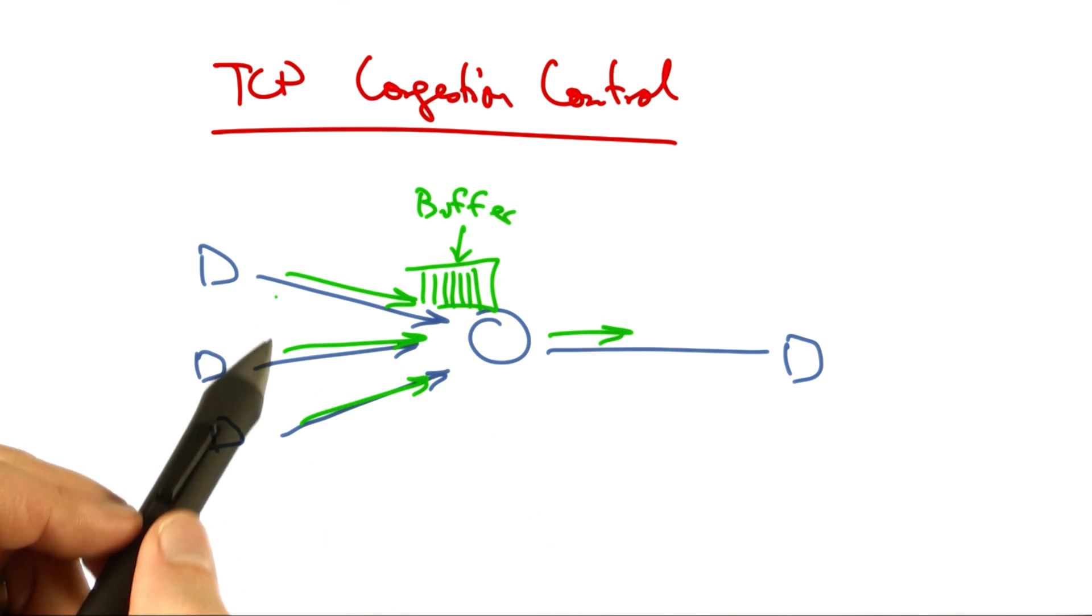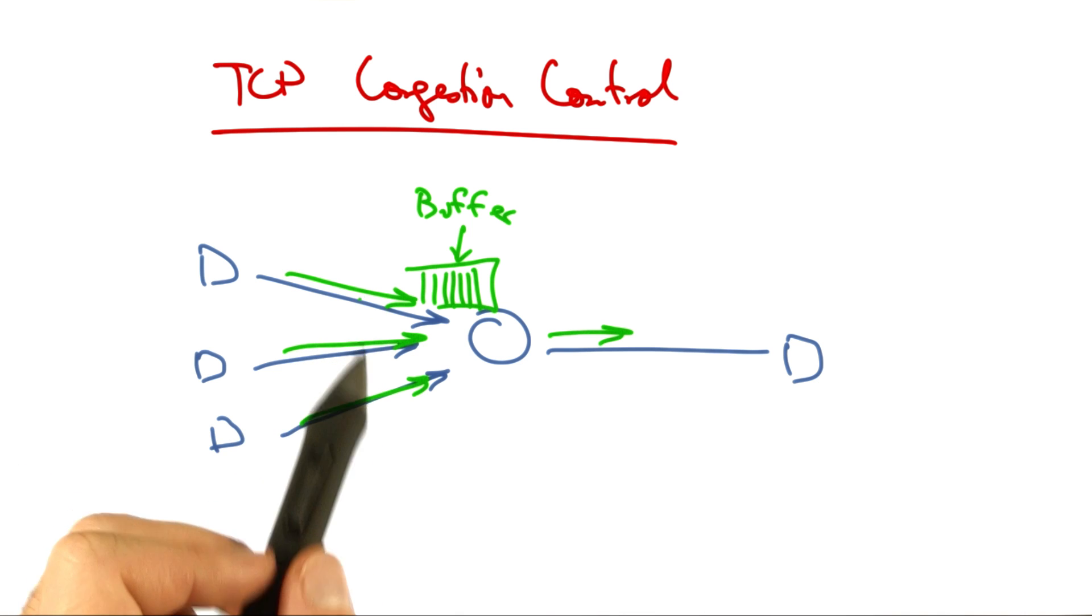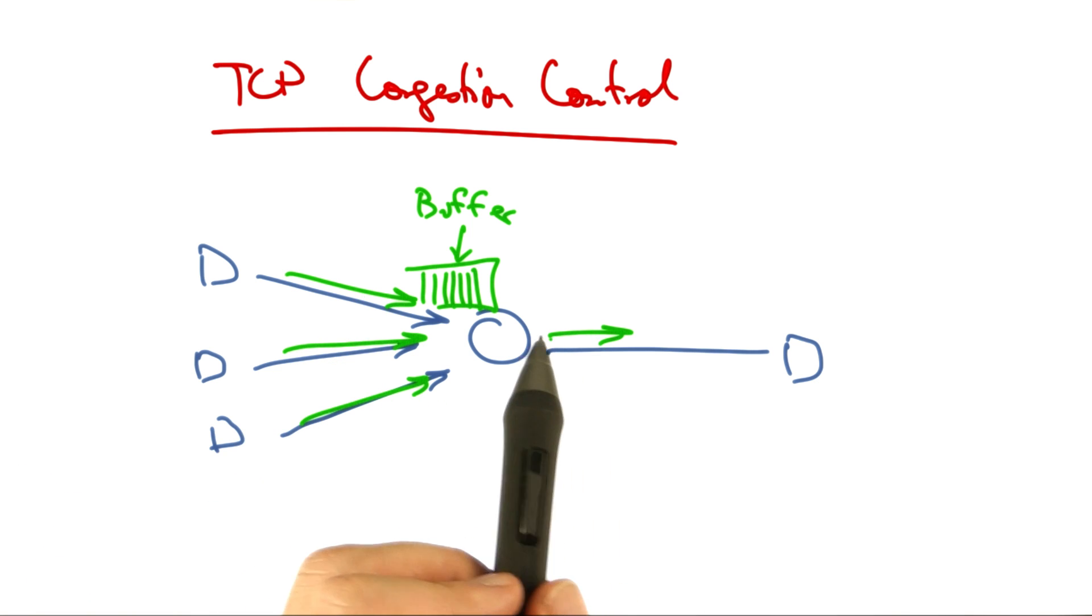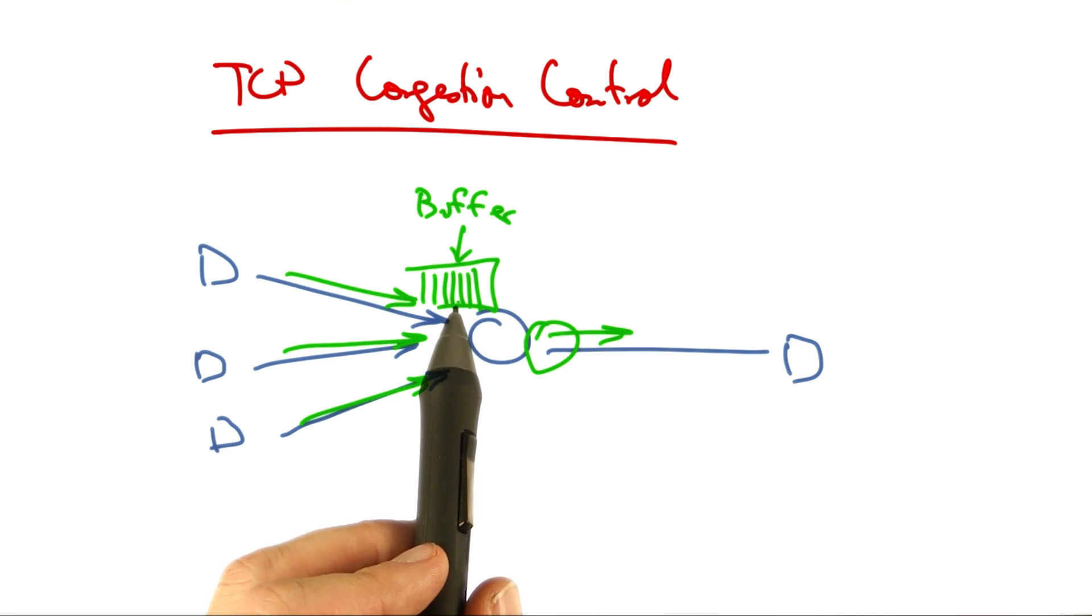So you might imagine, for example, that if all three of these senders are sending at a rate that is equal to the rate at which the router is able to send traffic downstream, then eventually this buffer will fill up.